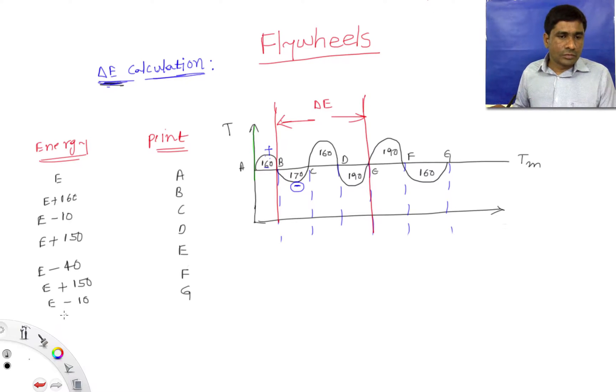What is the minimum energy from all these cases? At point E, that is E minus 40. And what is the maximum energy? That is at point B, E plus 160. So energy at B, E plus 160 minus energy at E, E minus 40, delta E equals 200. We got the same answer that we have already deduced by using the crankshaft speed versus theta diagram.